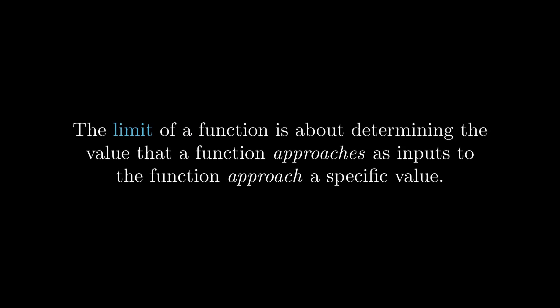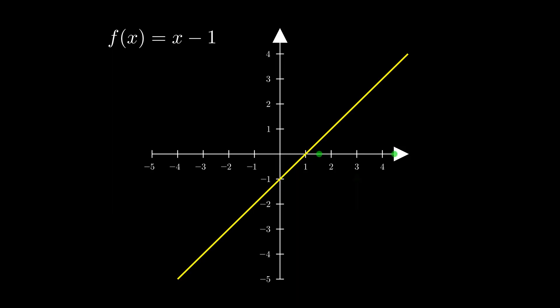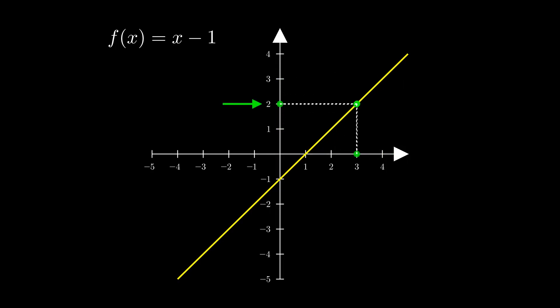First, let's all get on the same page by building up some intuition for what a limit is. The limit of a function is about determining the value that a function approaches as inputs to the function approach a specific value. Let's start by looking at this function and trying to determine what the limit of the function is as we approach the input value of x equals 3. If we look at the inputs that are near x equals 3, and then look at the corresponding output values, we see that those values appear to be approaching 2. Thus, the limit of the function as x approaches 3 is 2, which we can write using this notation.